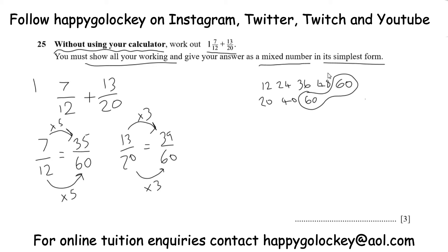So actually what we've got then is 35 60ths plus 39 60ths. And now that we're always talking about 60ths, it stays there, and we just need to do 35 plus 39, which is 74 60ths.